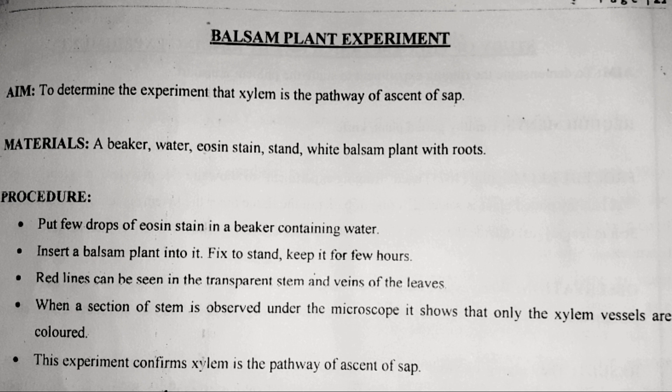Usually in this experiment, eosin stain is used. But instead of one stain, in this experiment we are going to use three different stains. Number one is eosin. Number two is safranin. Number three is crystal violet. So instead of one stain, we are going to use three different stains in the current experiment.